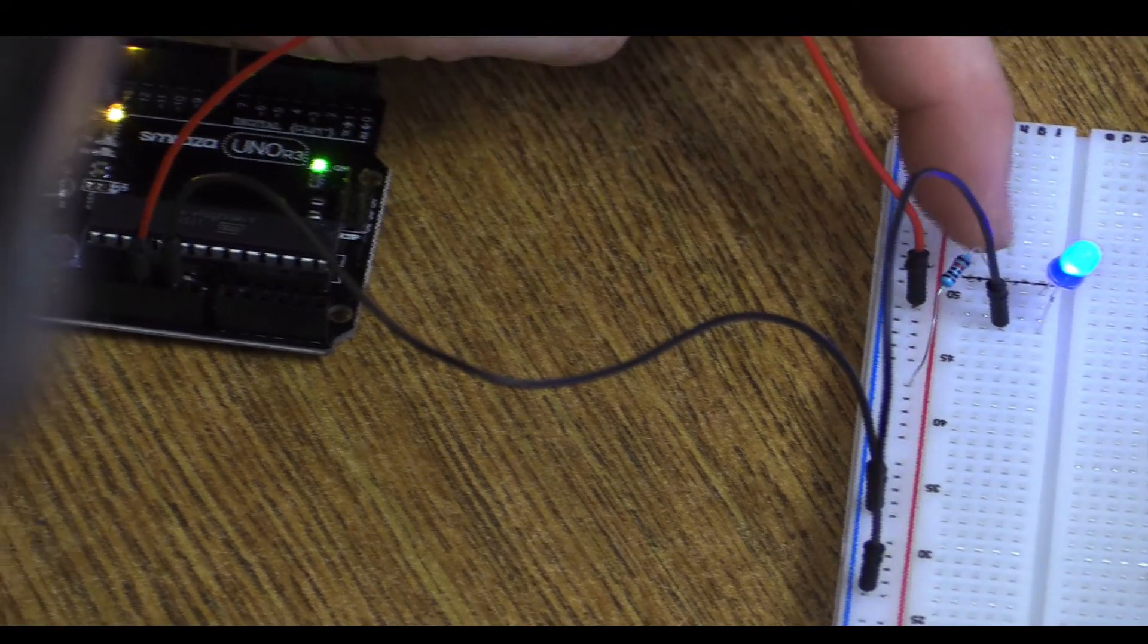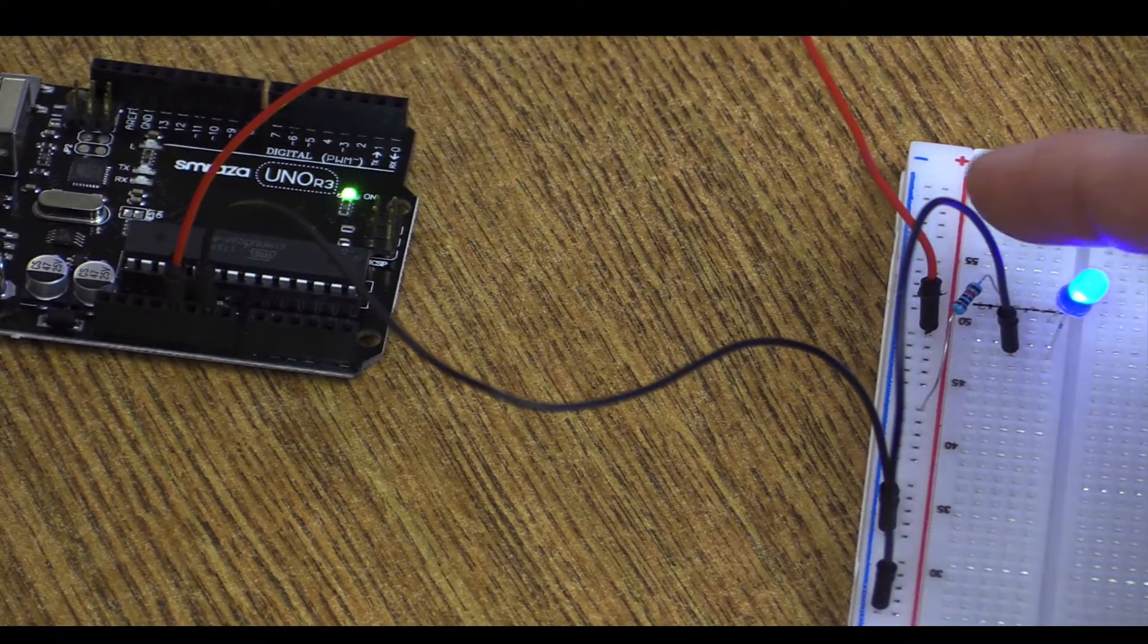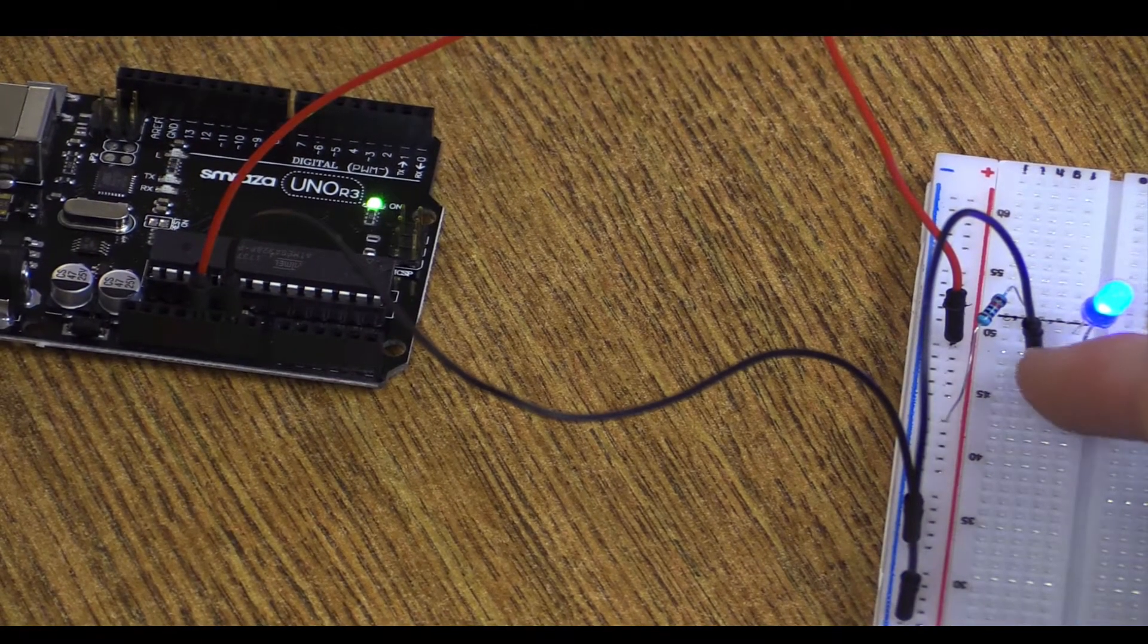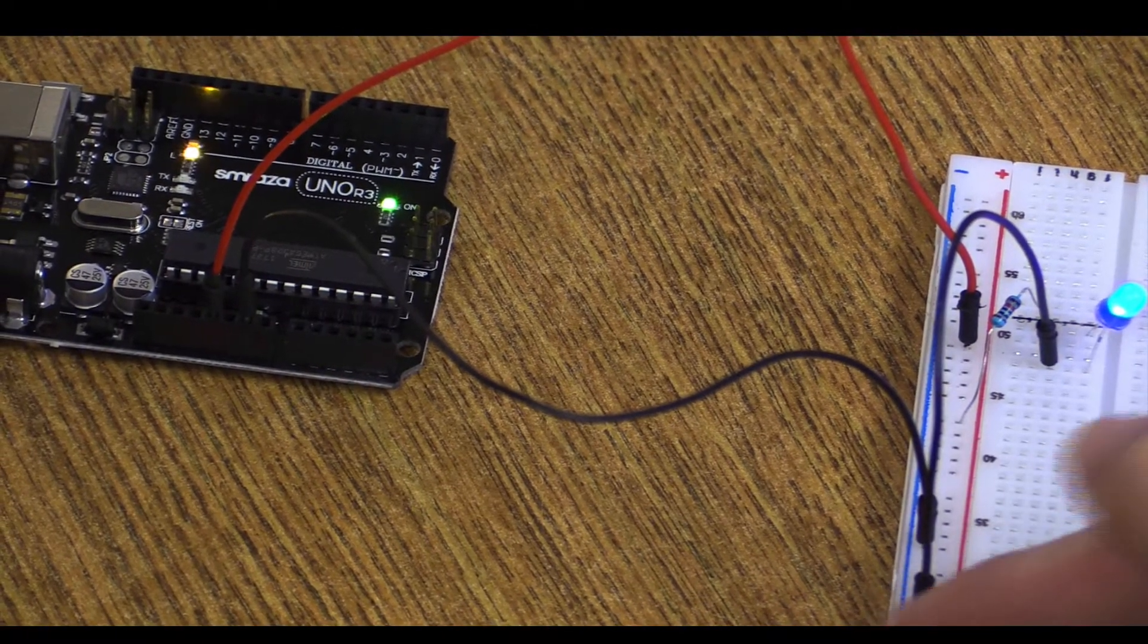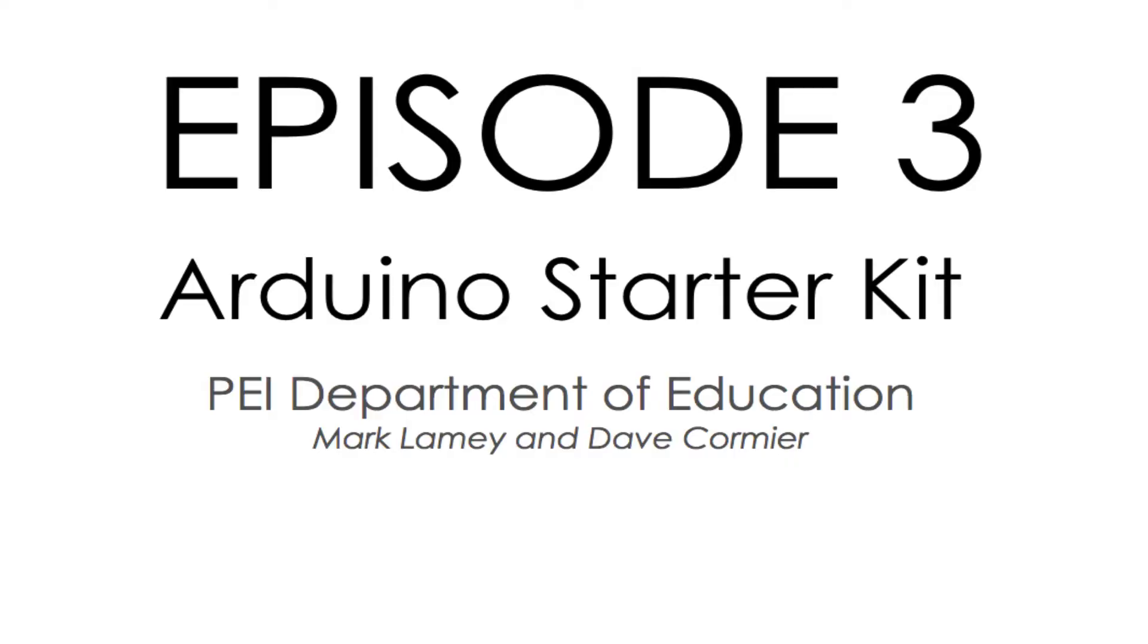So the power is coming in the red line, through the resistor over here, that takes some of the power away because 5 volts is a bit too much for this light. It goes into this blue light, comes out the minus, goes into the big long minus row, and then back into ground. You have just built your first circuit on a breadboard. Well done. Let's check it out.